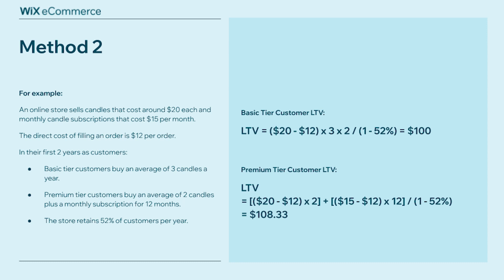We do the same calculation for our premium tier customers, adjusting for order costs. So: ($20 minus $12) × 2 candles, plus ($15 subscriptions minus $12 fulfillment) × 12 months, divided by the churn. That gives us $108.33 for the premium tier.